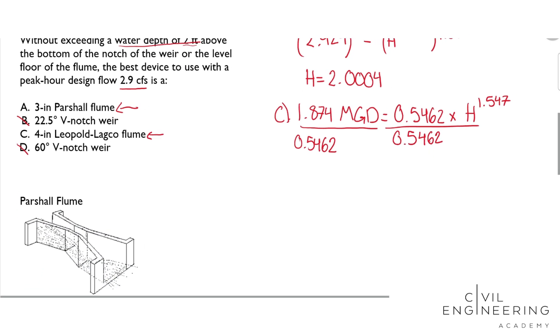And we will get 3.4316 is equal to H to the 1.547. Take that 1 over 1.547 power on each side.